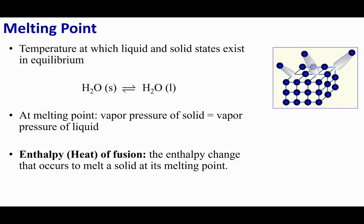A solid piece of material can run the same experiment. Molecules at the surface of a solid follow the Boltzmann distribution, so some will have enough energy to escape the solid matrix into the vapor phase. The vapor pressure of a solid is extremely low, but solids do give off a small amount of vapor — that is the vapor pressure of the solid.